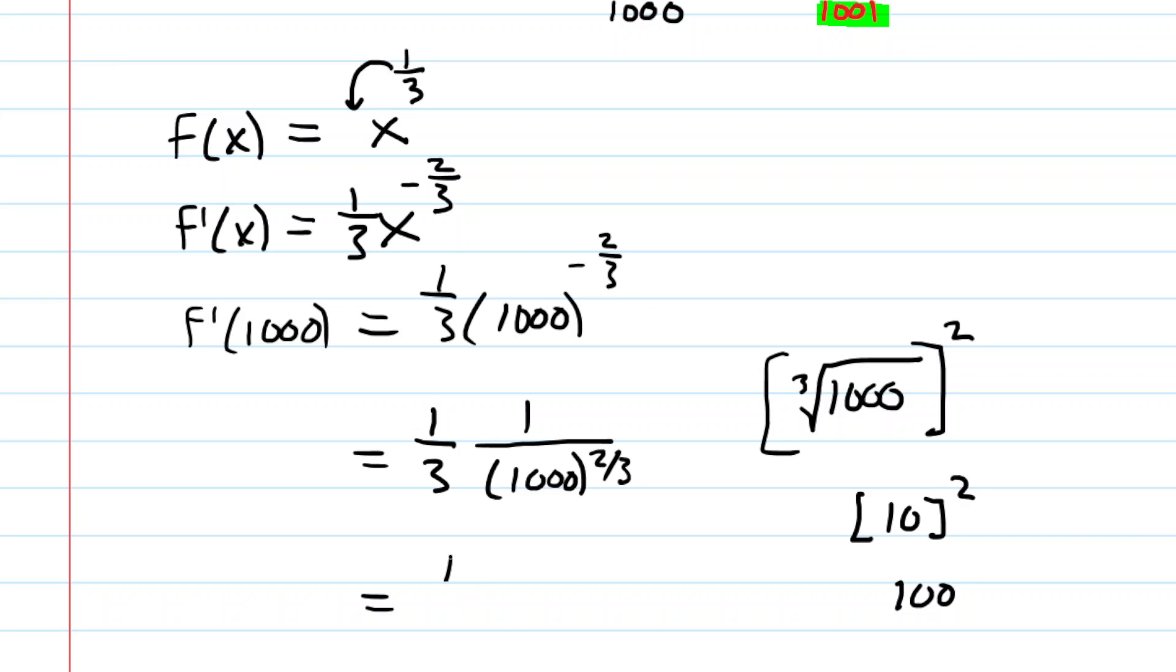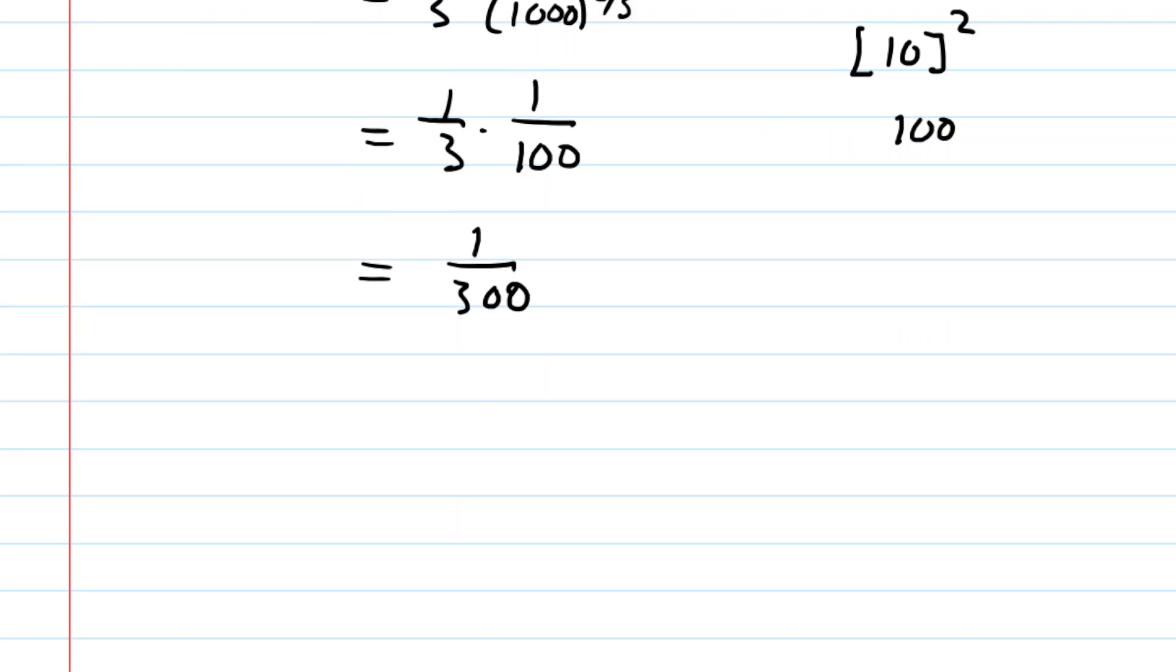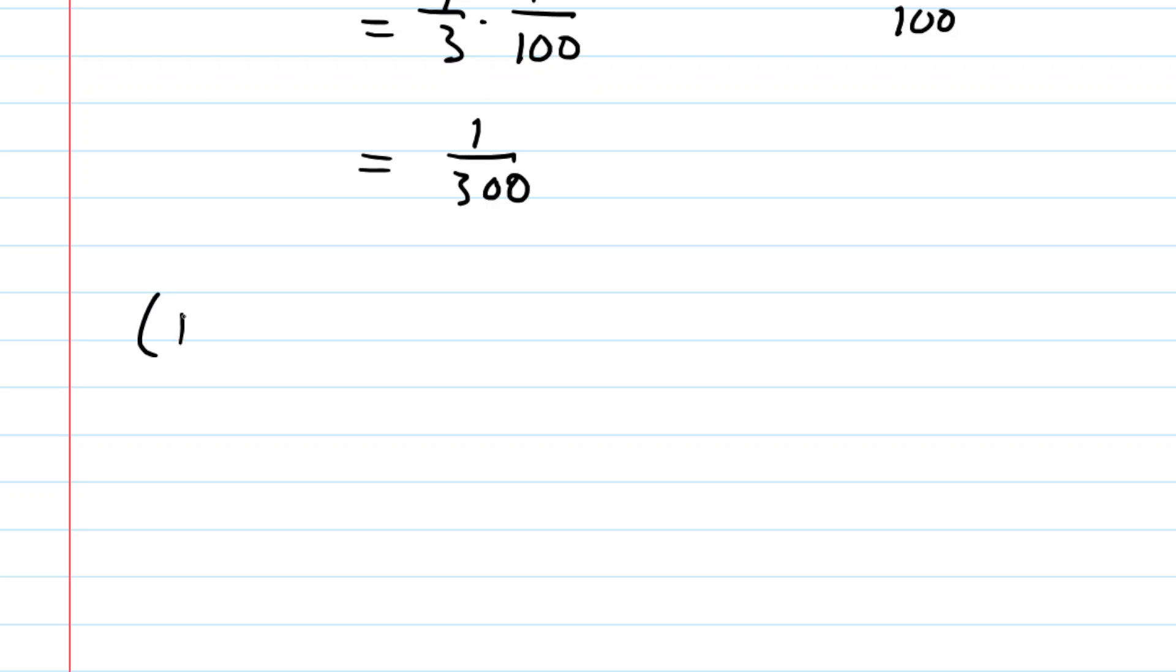So going back to our problem here, we would have 1/3 multiplied by 1 over 100. And then finishing simplifying, we would have 1 over 300. So let's consider the data we have for our tangent line. We have a point, which is 1,000 comma 10, and then the slope of that tangent line at that point is equal to 1 over 300.